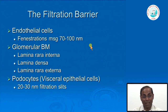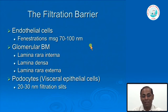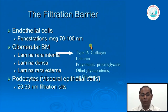The podocytes are the most important cells maintaining the integrity of the glomerular filtration barrier. They have slit pores—filtration slits of 20 to 30 nanometers—which are not free spaces but are closed by certain molecules. Regarding the composition of the glomerular basement membrane, one may ask what it consists of.